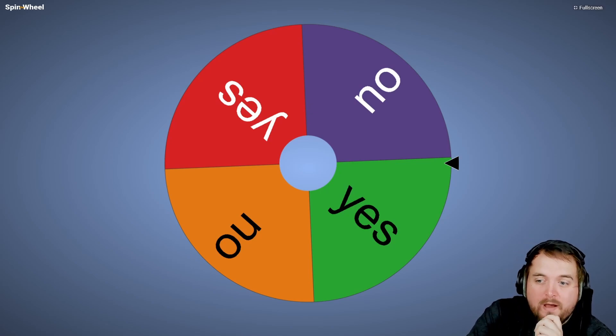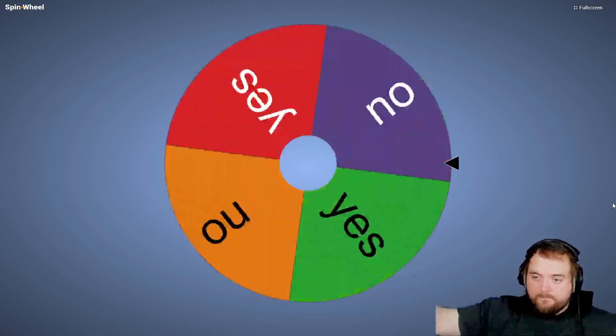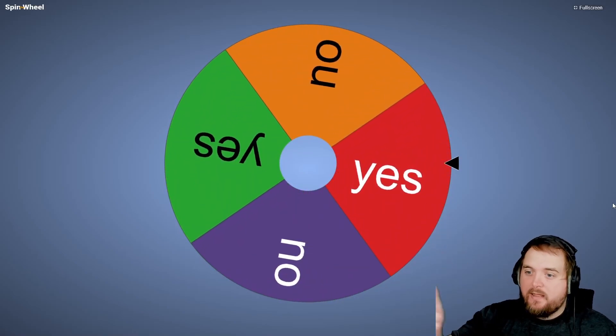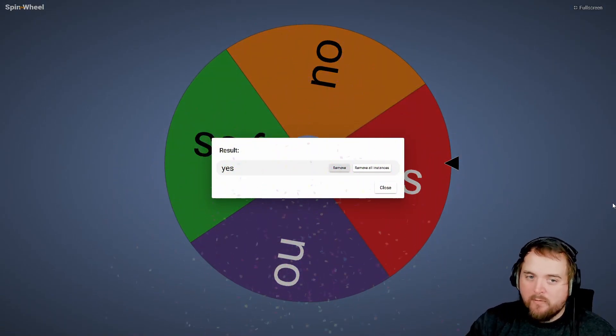First up, we are going to pick yes or no for an all-rounder. I would like an all-rounder, it would be a lot easier. But if it's just a batsman or just a bowler, it is what it is. We are going to have a spin now. We are an all-rounder. We'll take that. Bit of batting, bit of bowling.